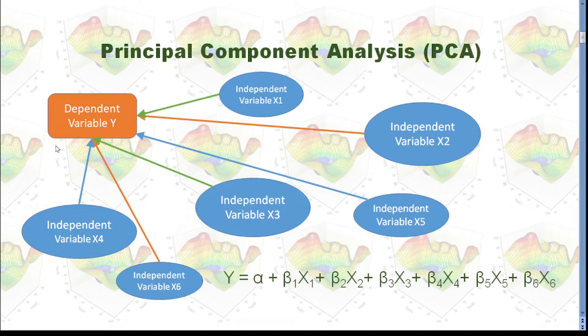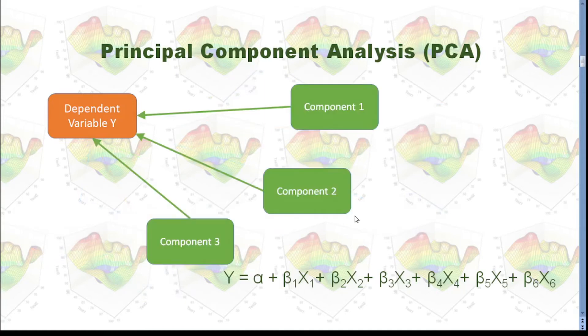If we have a dependent variable y here and we have several independent variables like x1, x2, through x6, then we can build our model based on this formula. If we want to reduce dimensionality, we can build principal components like component 1, component 2, and component 3.